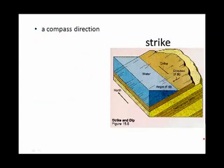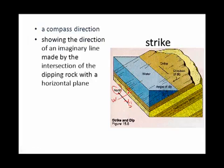Geologists also want to describe the direction in which the rock layers are tilting. In this, you'll notice that we've got north. If we wanted to, we could always put in west, east, and south. And we have a tilting rock layer. The compass direction is given by the strike. The strike is the direction of an imaginary line made by the intersection of the dipping rock with the horizontal plane. In other words, this line right there.